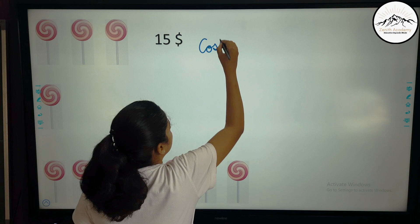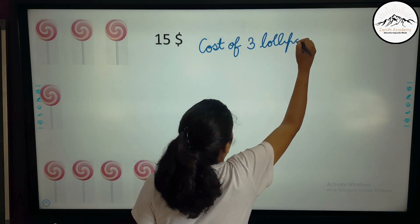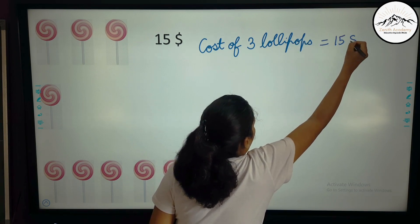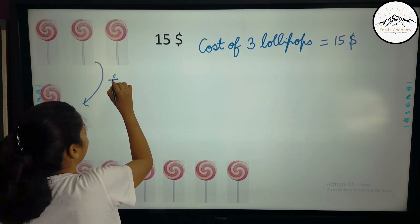Cost of 3 lollipops is equal to $15. So first we will find the cost of 1. How? By dividing.